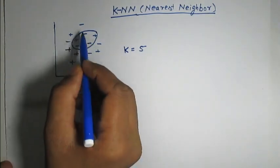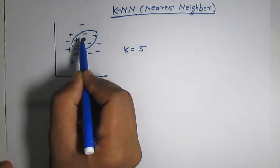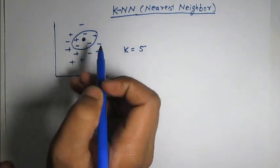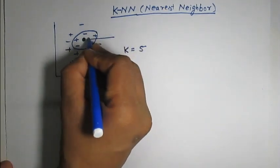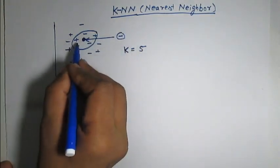Now, we can see that from these 5 nearest neighbors, 3 neighbors are having label minus. So, according to the rule, we will assign label minus to this unknown data point.